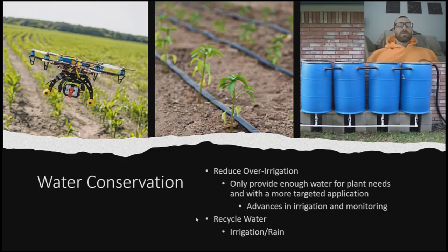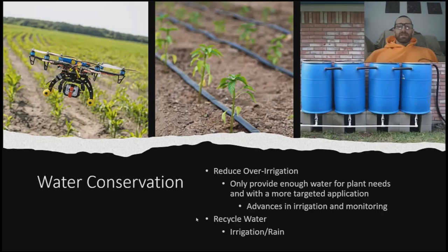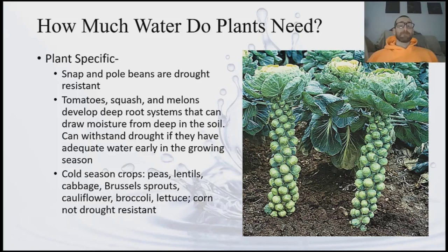If we're concerned with water conservation, another thing we can do is recycle water — either recycling our irrigation water, which is more common in a greenhouse setting, or harvesting rainwater, which I'll briefly talk about at the end of this lecture. One of the ways to conserve water is to only provide enough for the plant's needs, which brings up the question of how much water do plants actually need. This is very plant specific — different species have different water requirements based on how and where they evolved.